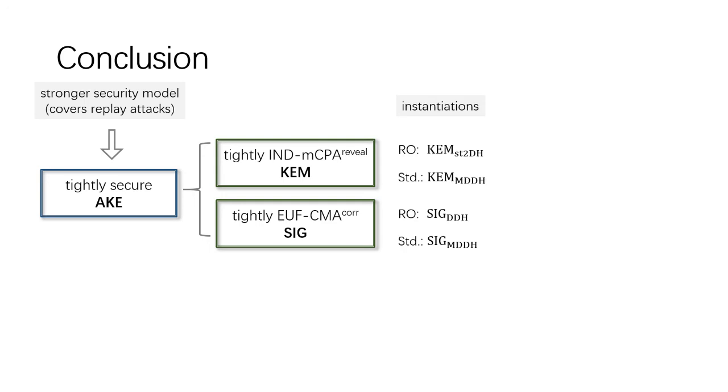Finally, we give two instantiations of tightly secure two-pass AKEs. We present an instantiation of KEM and prove its tight IND-mCPA-reveal security based on the CDH assumption in the random oracle model. Together with the SIG-DDH scheme, we obtain the first practical two-pass AKE scheme with explicit authentication and tight security from the DDH assumption in the random oracle model.